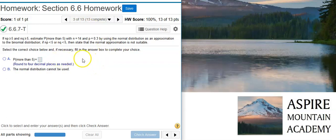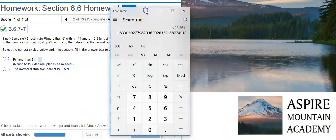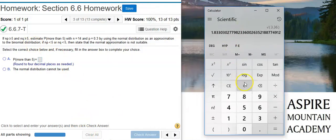Okay, before we can use our normal distribution to approximate the binomial in calculating our probability, we need to check our requirements. So to do that, I'm going to pull out my calculator here, and we're going to calculate first np to see if that product is greater than or equal to 5. So here, n equals 14, and p is equal to 0.3.